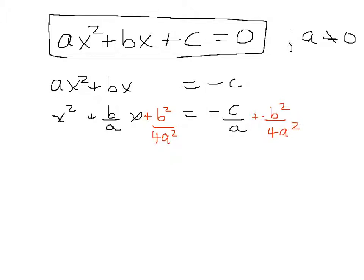So now, even though it may not be obvious, I have a perfect square on the left. And it is x plus b over 2a squared. If I square that, I'll get what's directly above it.